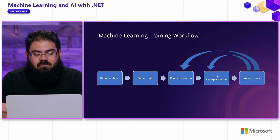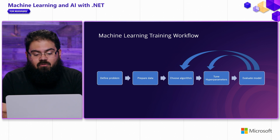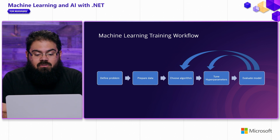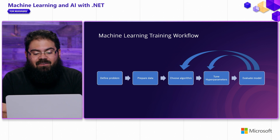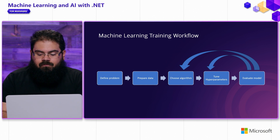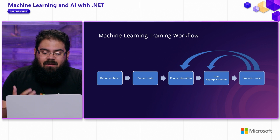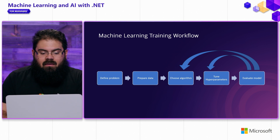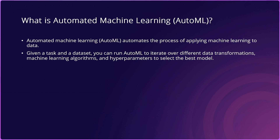This often tends to be a very iterative and experimental process. As you're going through it, your dataset may work better with one algorithm versus another. Depending on the algorithm you choose, the hyperparameters you tune may be different. You may want to try different iterations of both algorithms and hyperparameters, and in the evaluation phase determine which one works best for your particular dataset and problem. Again, this can be a very manual and very time-intensive process. Can we do better? In some cases, you can.